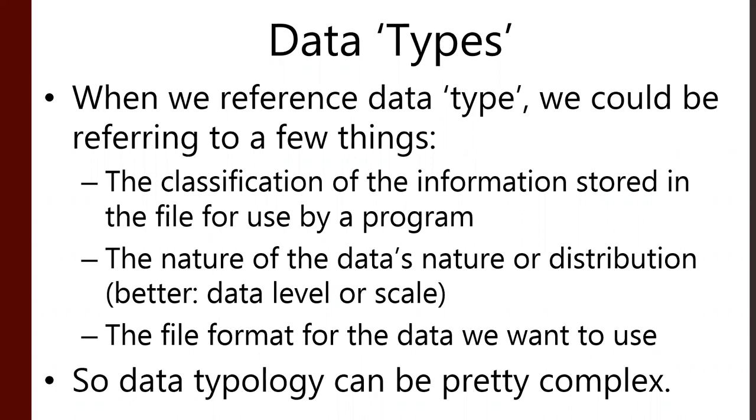So when we say type, we're referring to a few things. It could be the classification of the information stored in the file. It could be the data's nature or distribution, which we could say level or scale instead. What type of data is it? It's normal data, normally distributed. Once again, just as good of an answer as any. It could be the file format for the data. Maybe again, what file format is that? Oh, it's a shape file. Maybe a little bit clearer. So all of this data topology can be pretty complex.